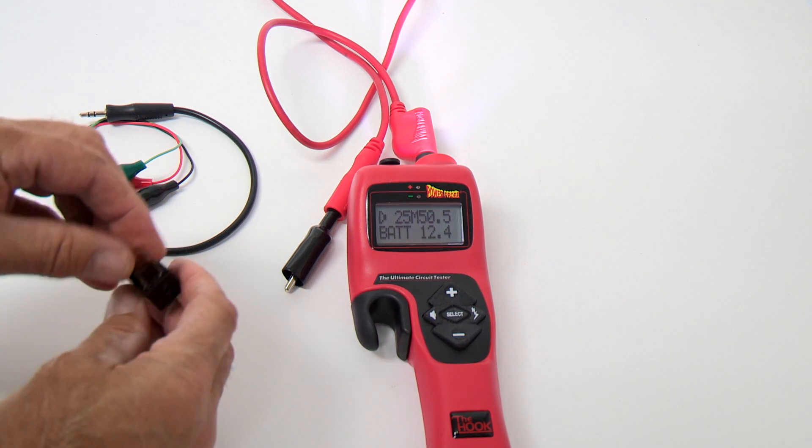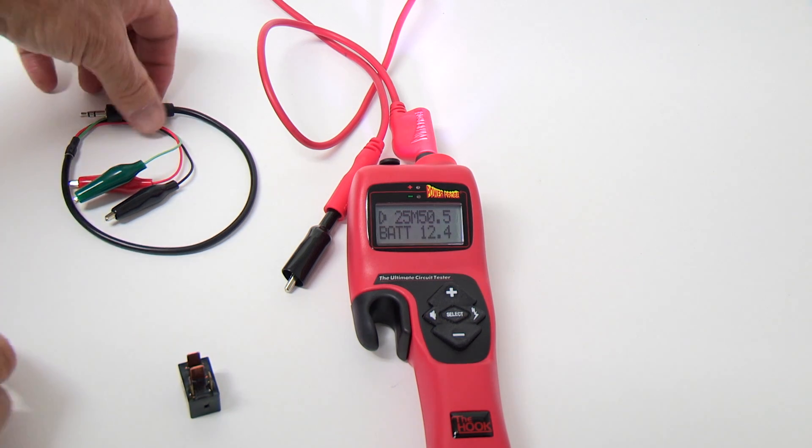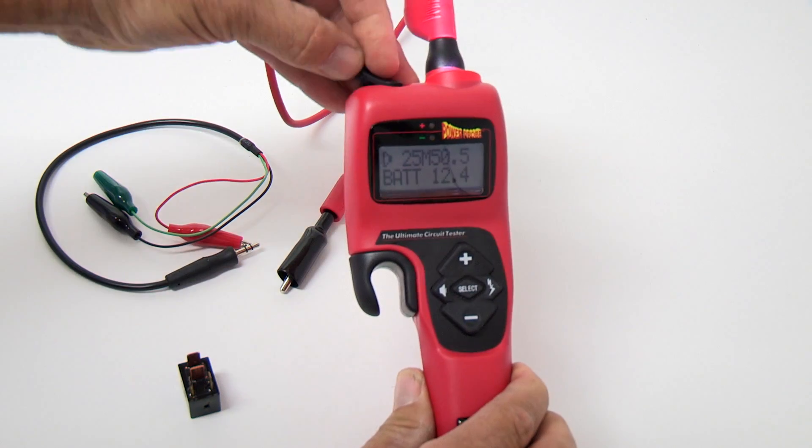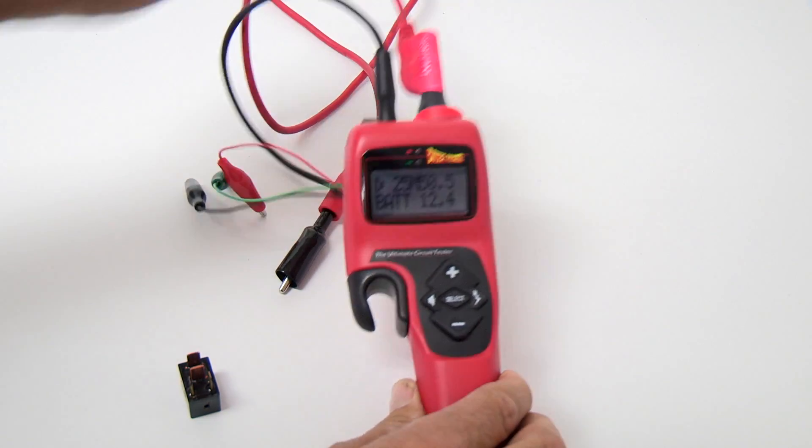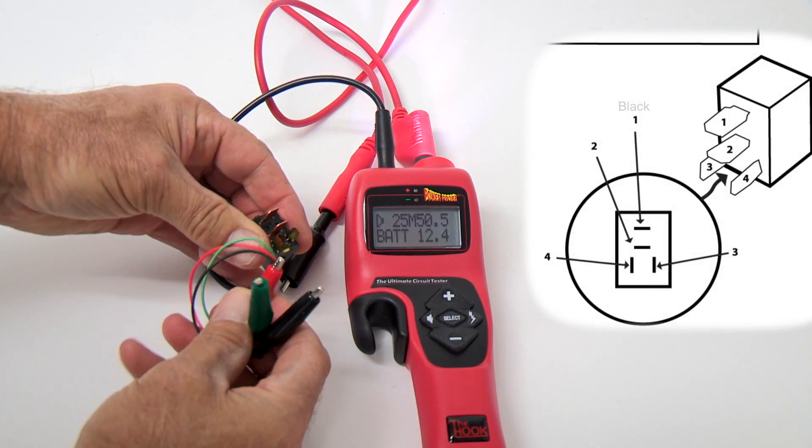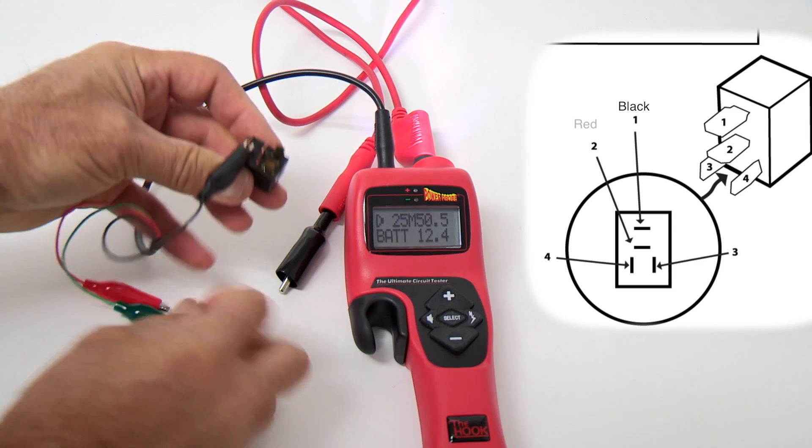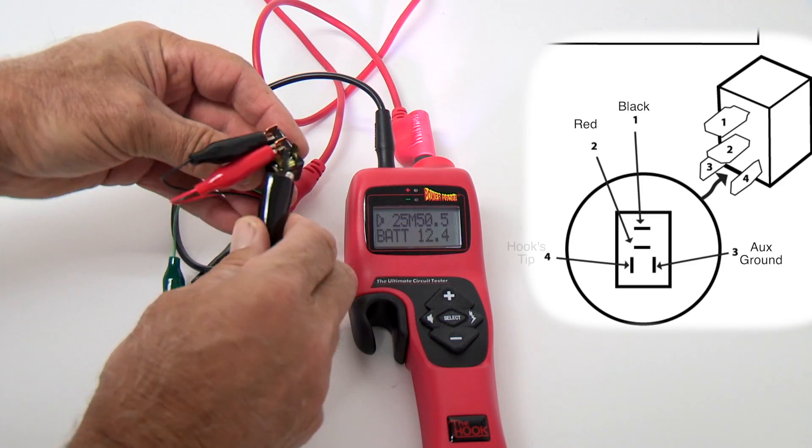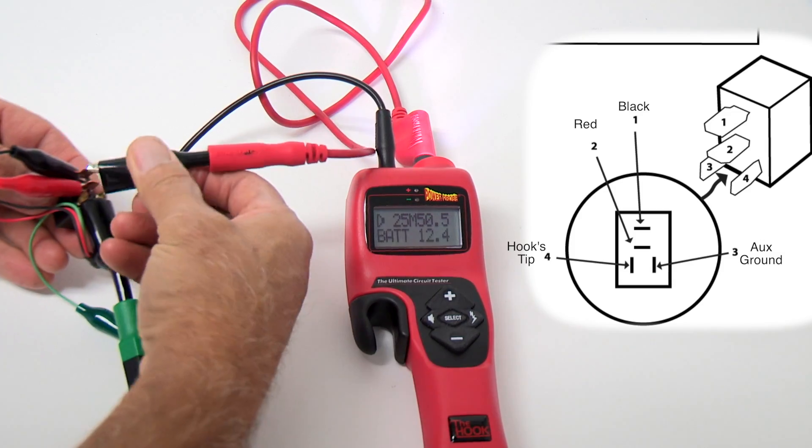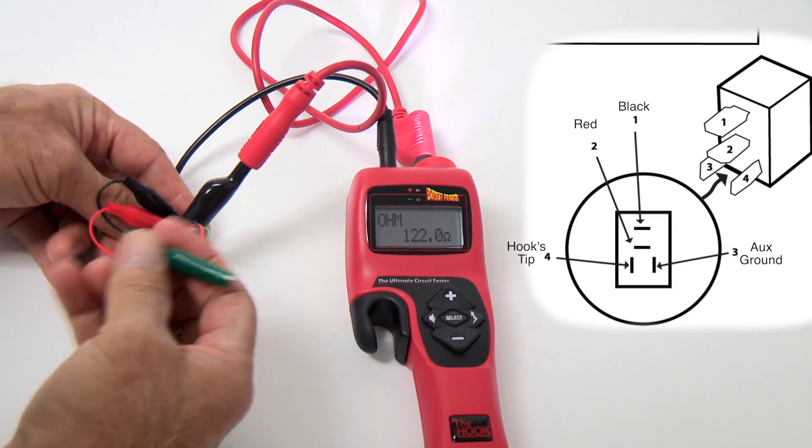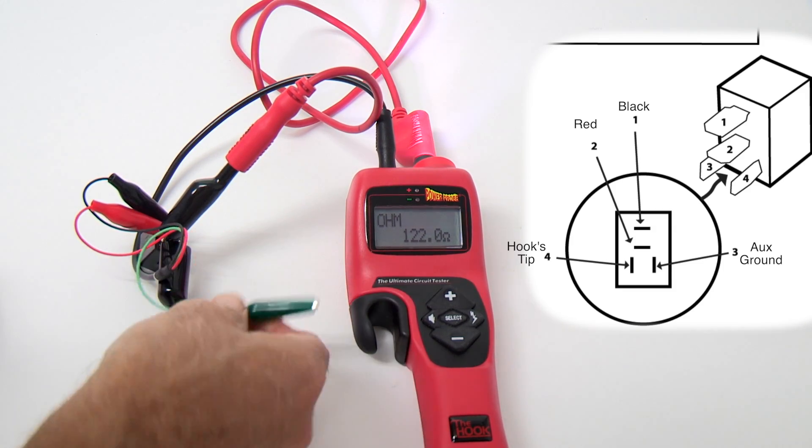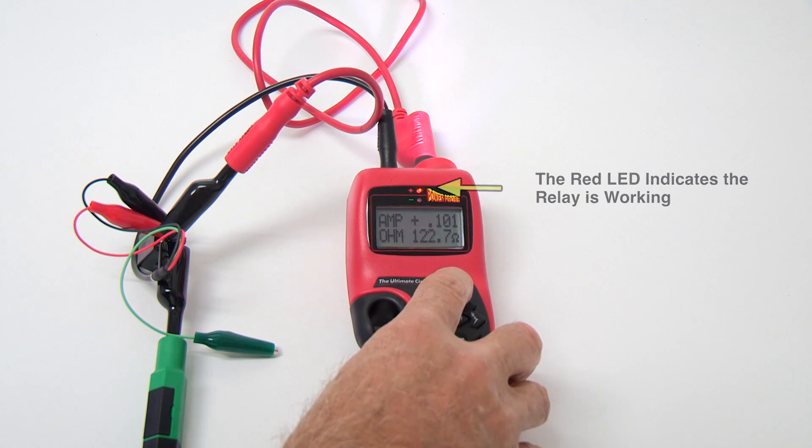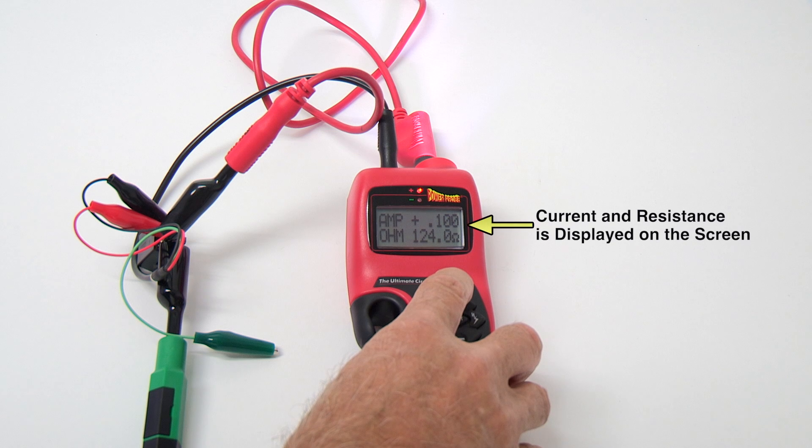Next, we'll test the relay. The hook has a built-in two-channel continuity tester for testing relays and electrical switches. Let's test the relay now. Insert the three-wire plug into the hook's continuity jack and attach the alligator clips to the relay terminals as shown. Black connects to terminal number 1. Red connects to terminal number 2. The hook's auxiliary ground connects to terminal number 3. The hook's tip connects to terminal number 4. Leave the green alligator clip off. This is used when testing five terminal relays. Now press the plus button, and the red LED should light and the relay should click, indicating the relay is working. You should also see the current and resistance displayed on the screen.